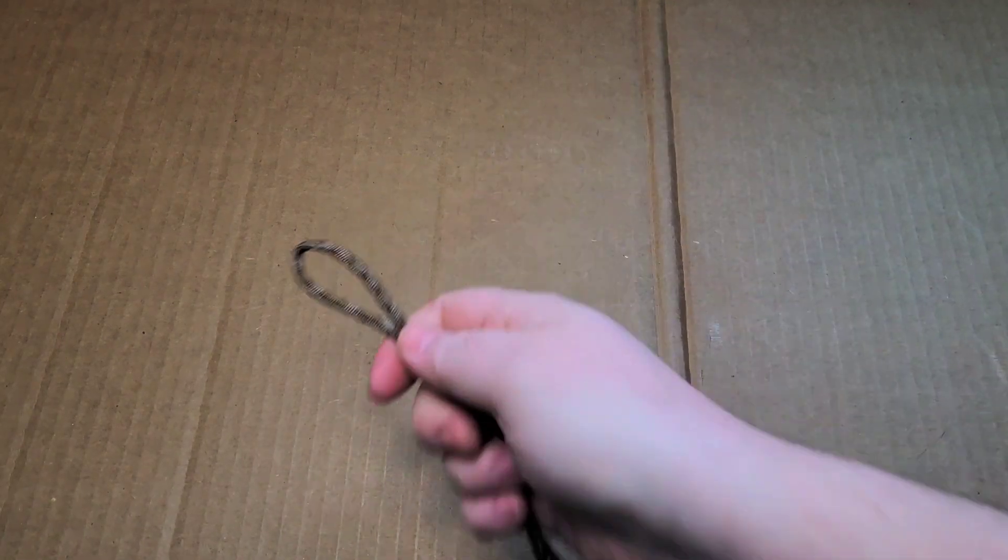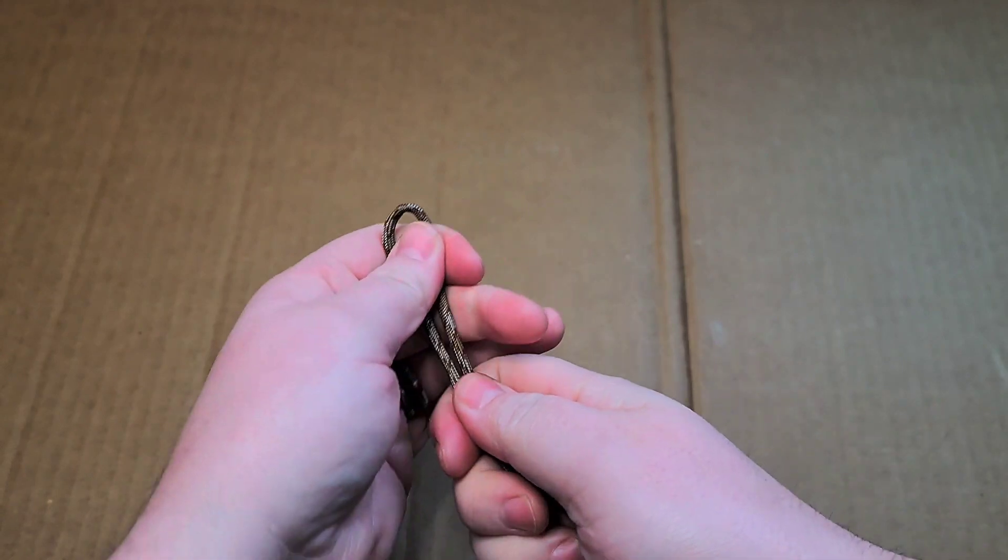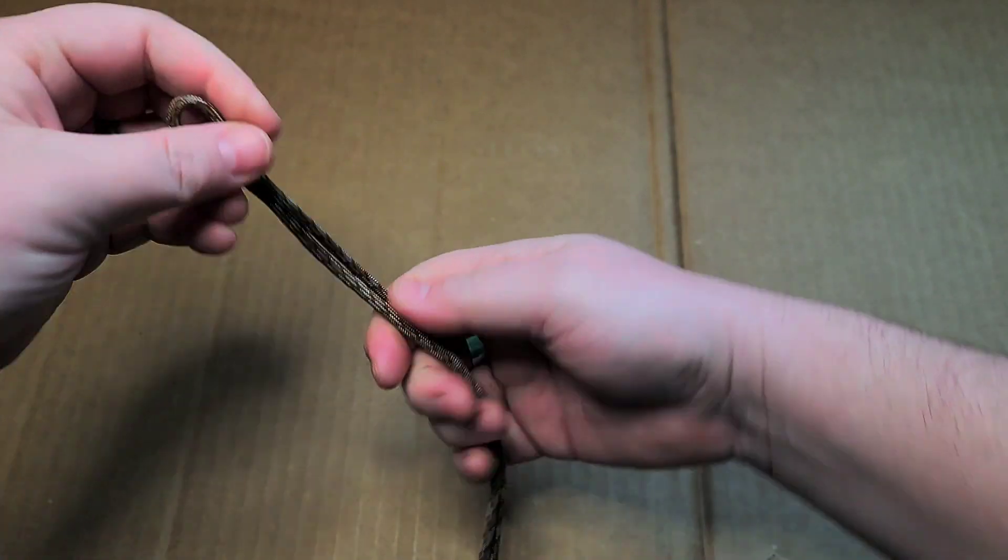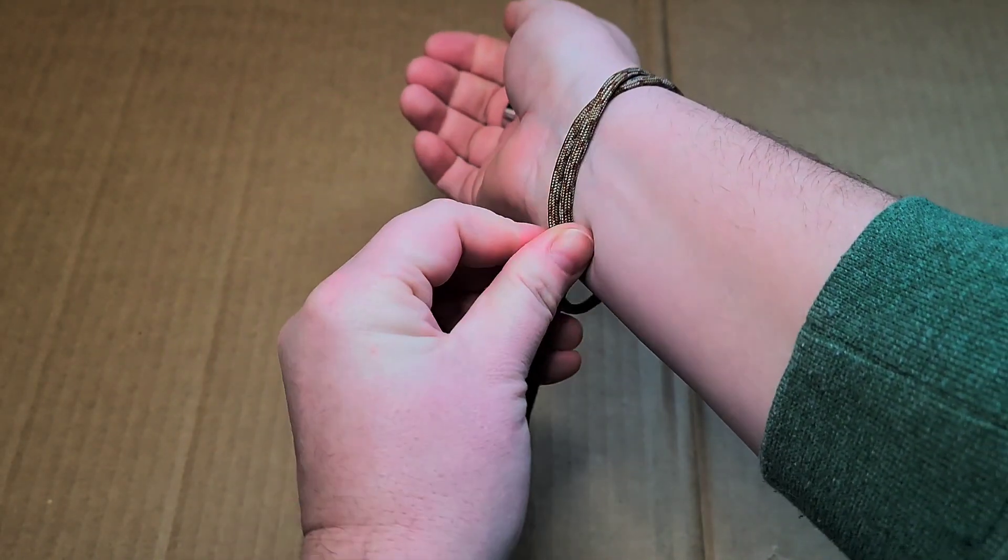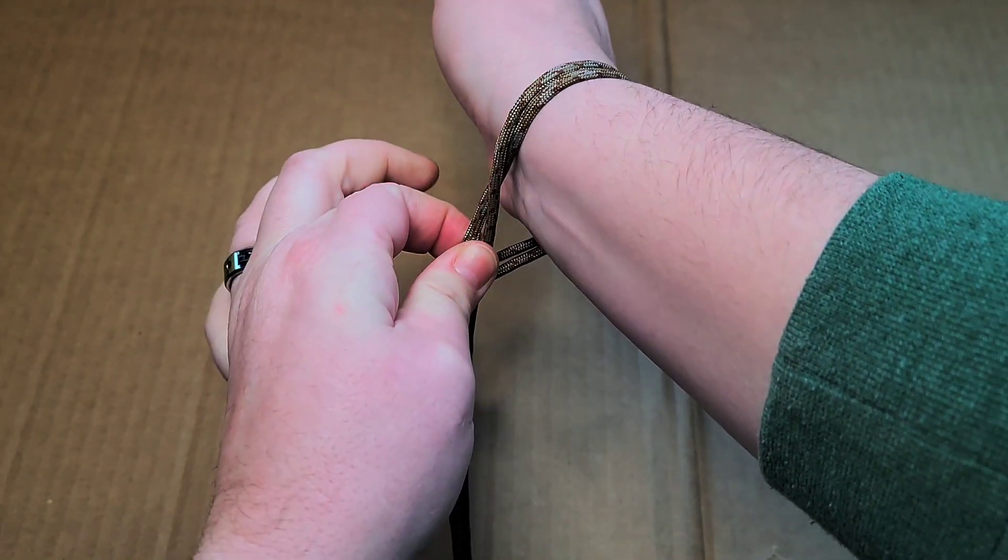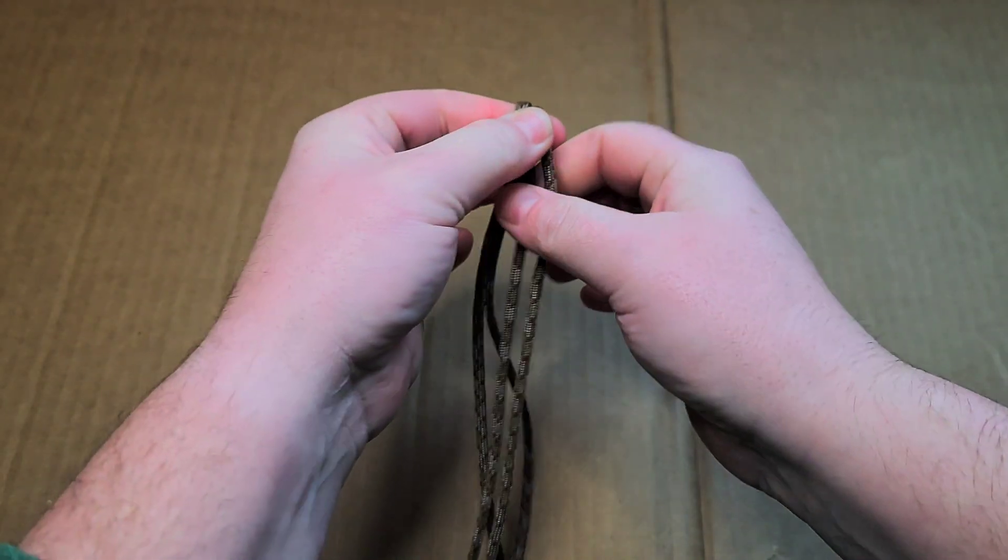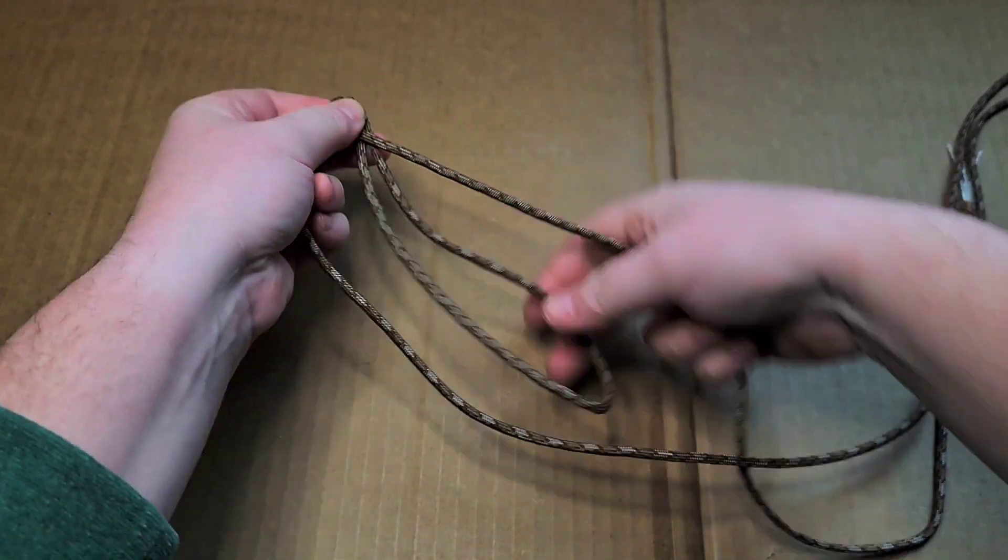So the first thing you want to do is measure your wrist. You take the two ends, you put them together, and then come up to the other end to the halfway point. You want to measure about how big you want it. I usually leave it a little looser. It does tighten up a little bit. Just about there then you want to fold it over.